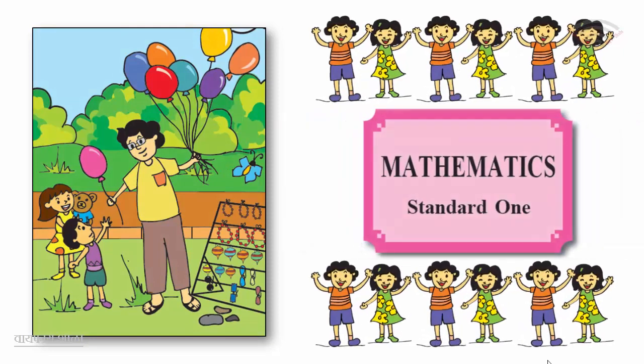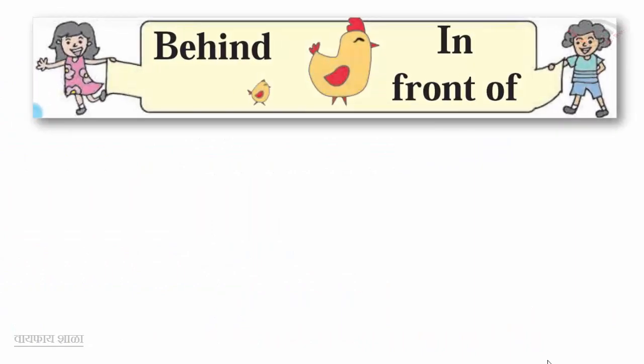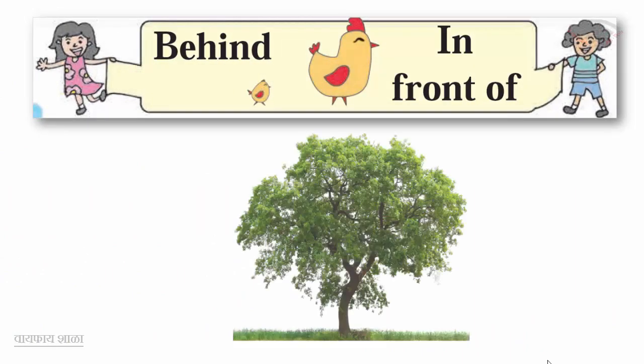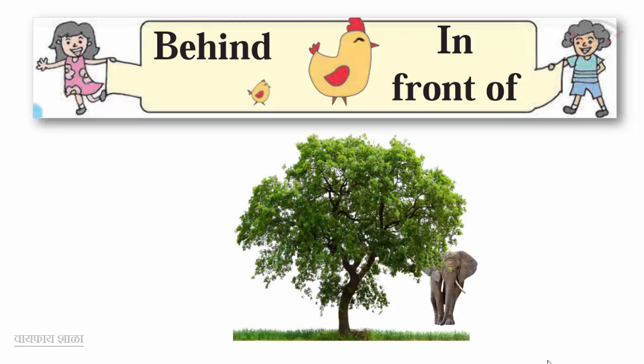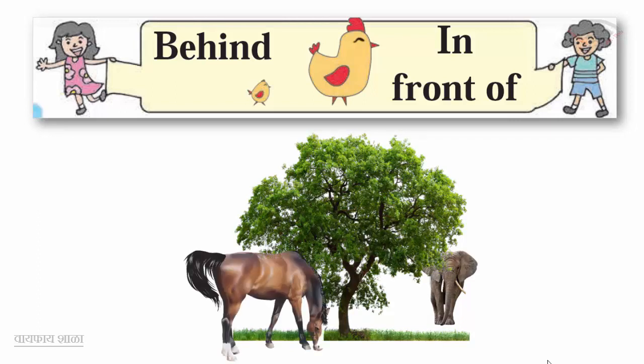Mathematics Standard One: behind and in front of. In this picture, the elephant is behind the tree and the horse is in front of the tree.